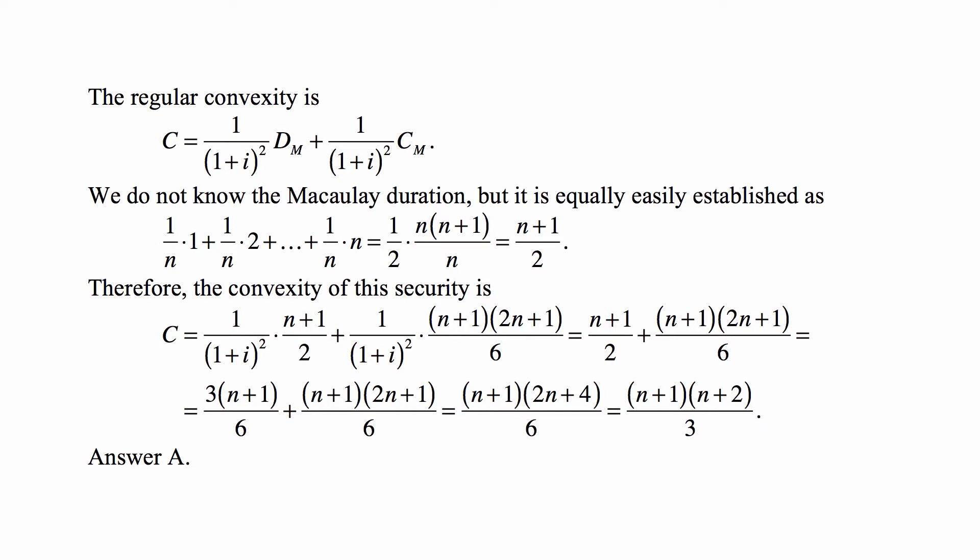And convexity is what you get when you plug this into the formula for convexity with respect to the interest rate. So it's one over one plus i squared times n plus one over two plus one over one plus i squared times n plus one times two n plus one over six. Interest rate is zero. So this just becomes n plus one over two plus n plus one times two n plus one over six. We find the common denominator, which is six. Then we multiply out and add up the numbers, and then we get n plus one times two n plus four, and then cancel the two from the top and the bottom, and we have the answer of n plus one times n plus two over three.